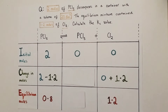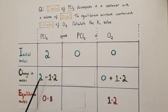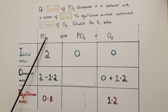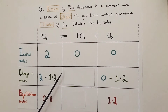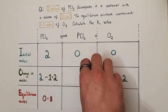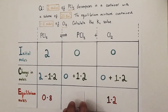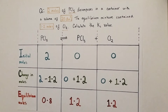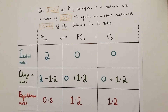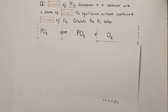We can also deduce how many moles of PCl3 will be formed based on the same molar ratio. One mole of PCl5 forms one mole of PCl3, so if we've used up 1.2 moles of PCl5, we'll form 1.2 moles of PCl3. That's zero plus 1.2 moles being formed. So we've formed 1.2 moles of PCl3 at equilibrium.